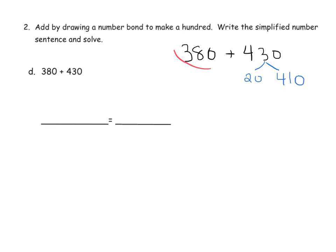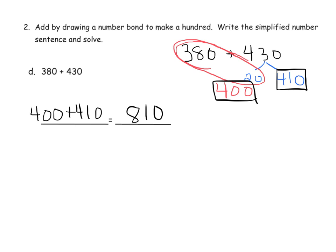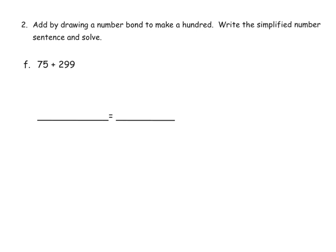And now, here is our milestone number. We now have 400. So our simplified number sentence will be 400 plus 410. And adding that together, we get 810. And sure enough, students might have been able to see that over here. That 400 plus 410 equals 810.